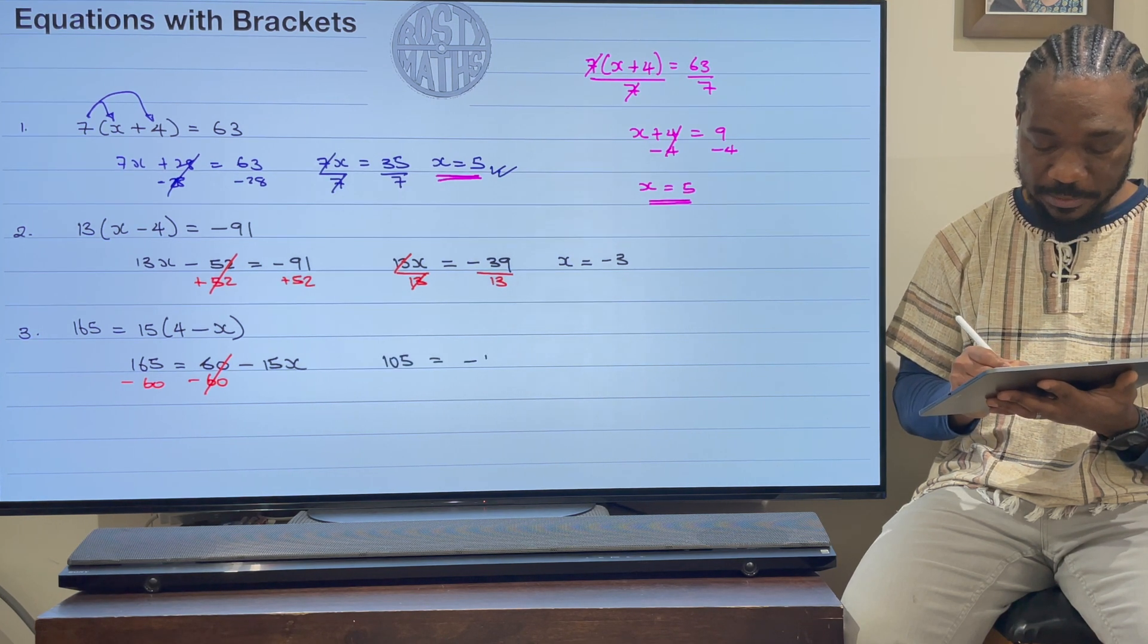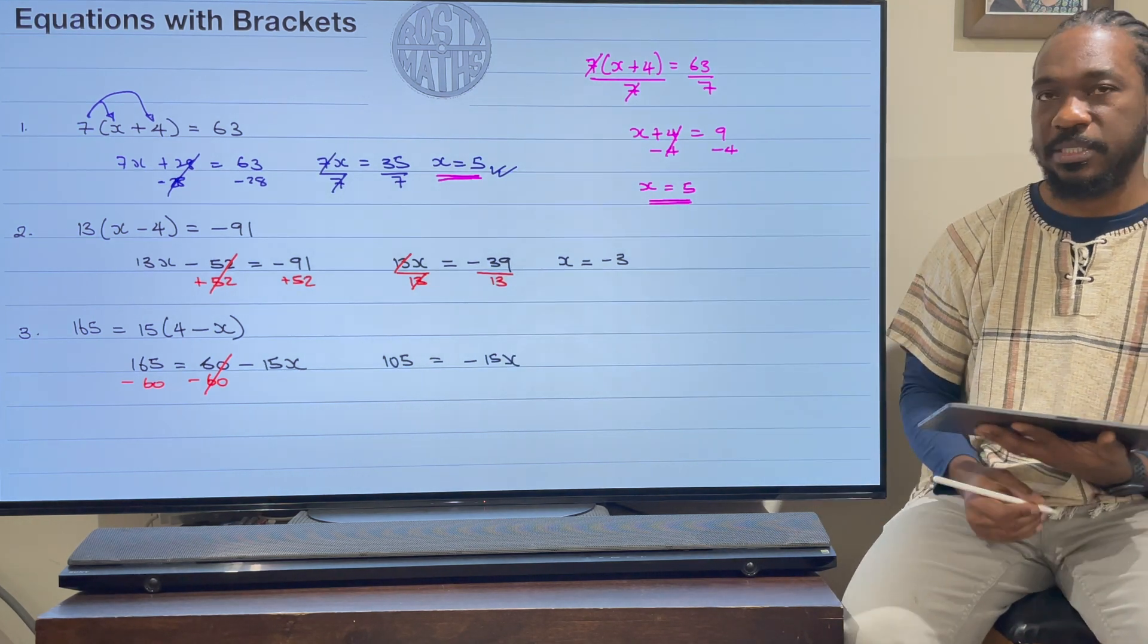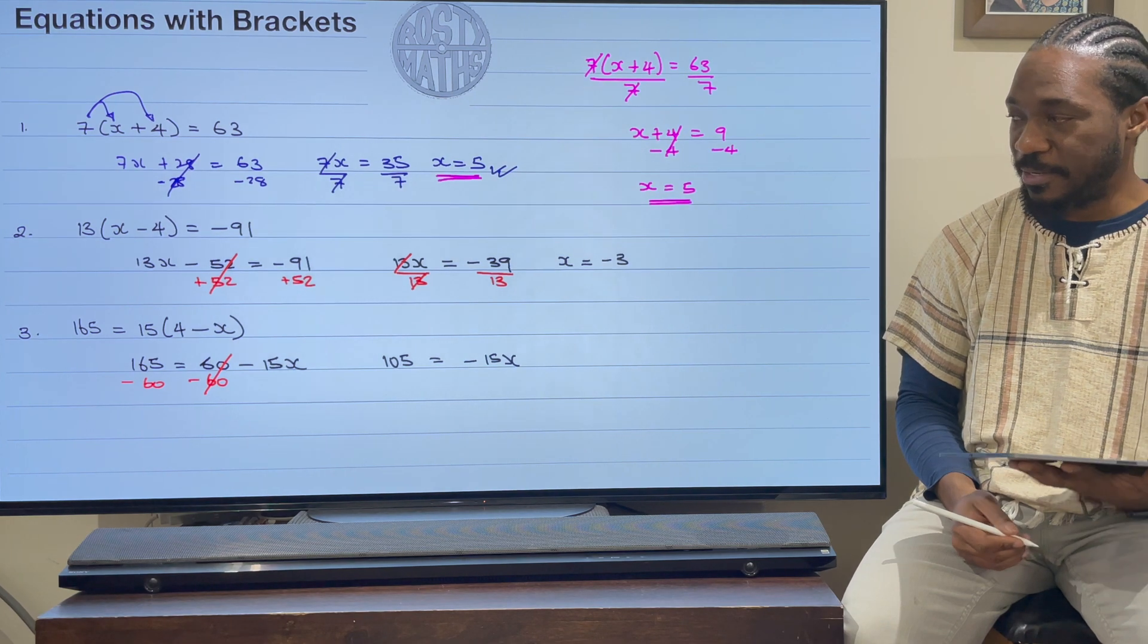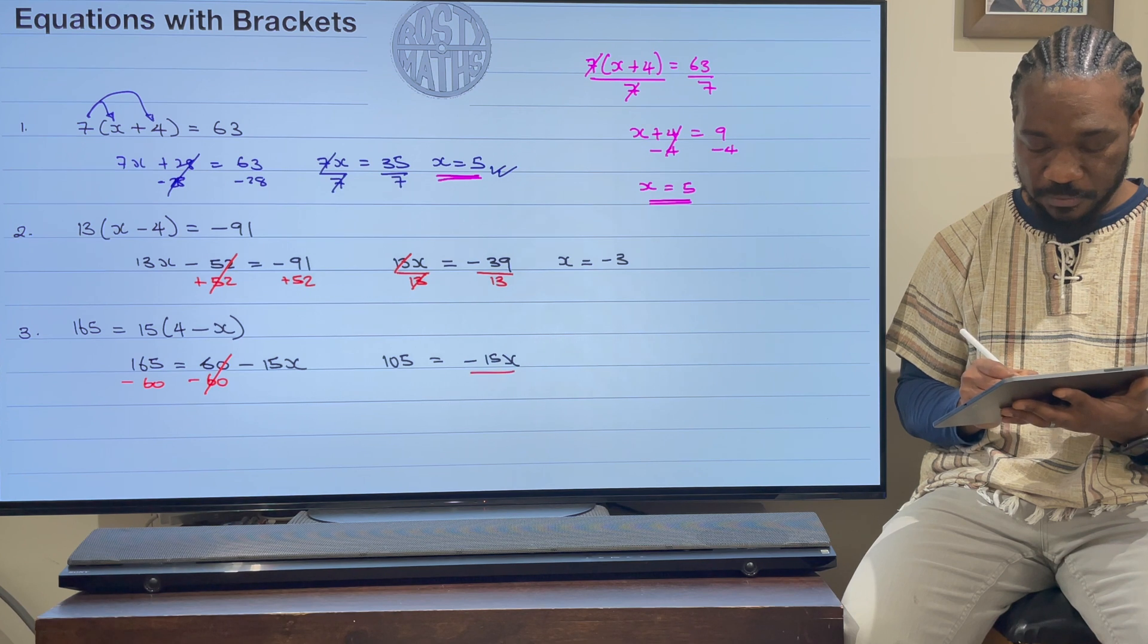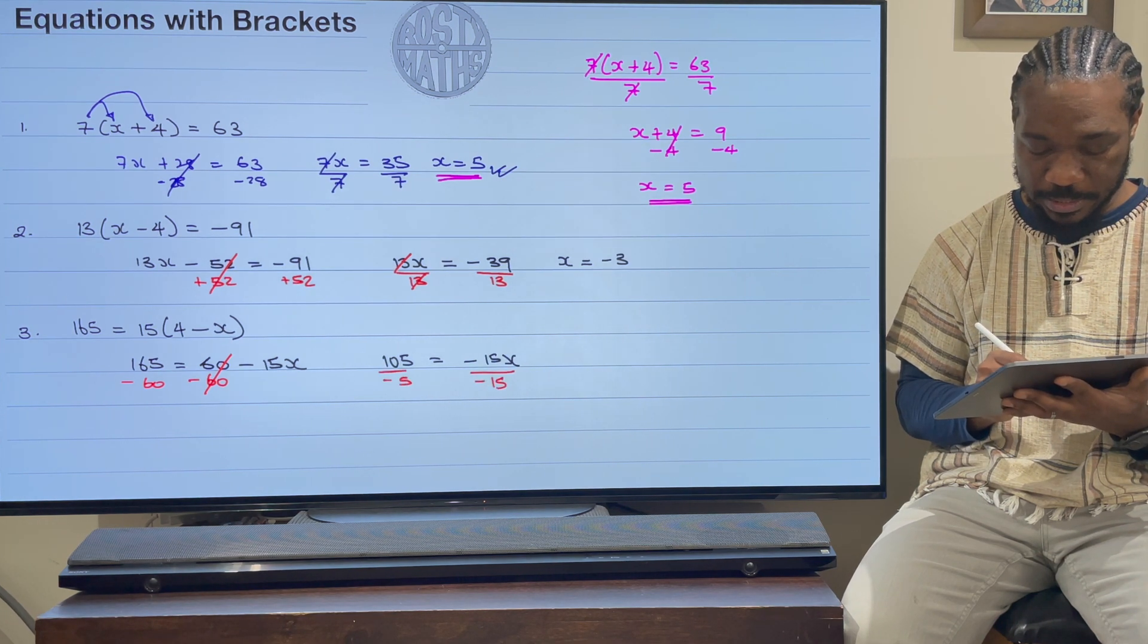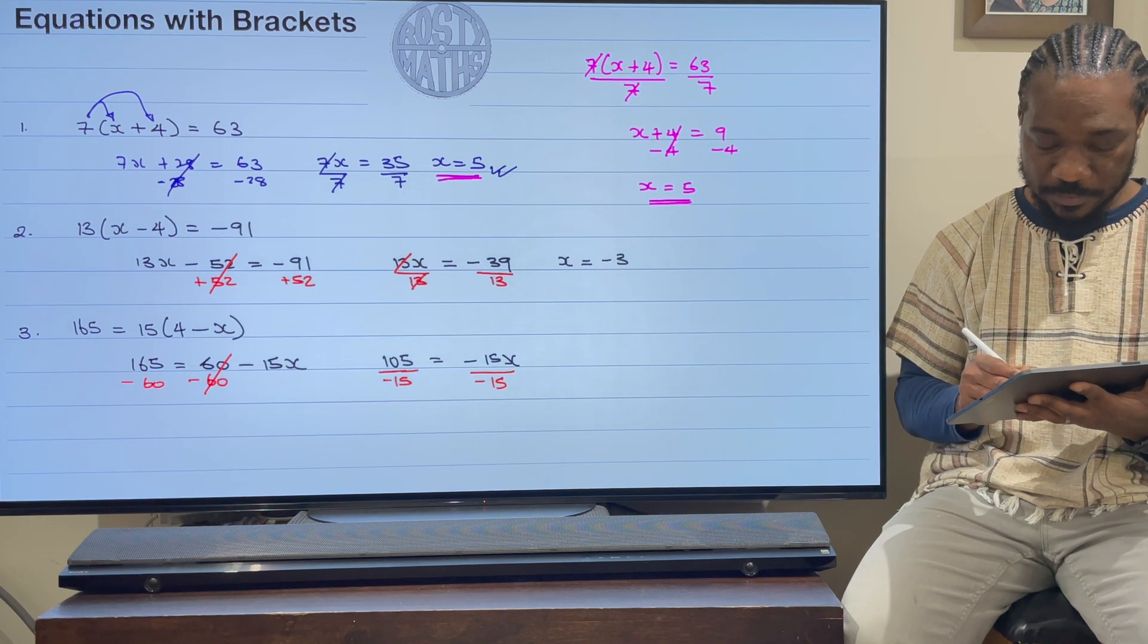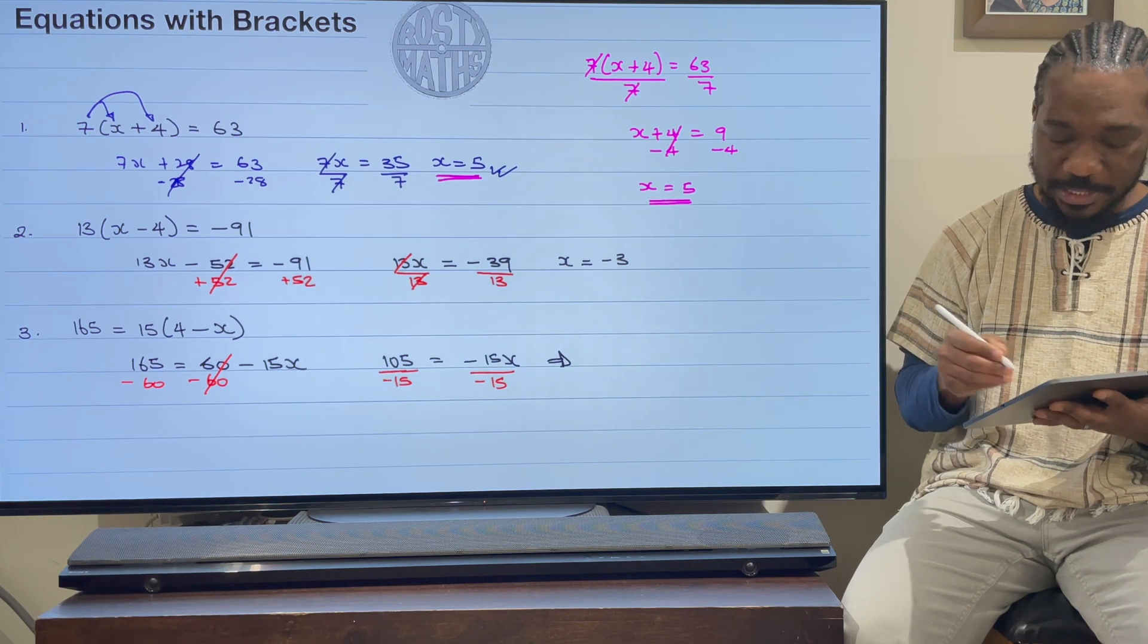So on my left-hand side, 165 take away 60 is 105, and that's going to be equal to -15x, because 60 take away 60 is going to be equal to 0 there. And then finally now, to finish this off, I just need to divide by -15 on both sides. Divide by -15 there.